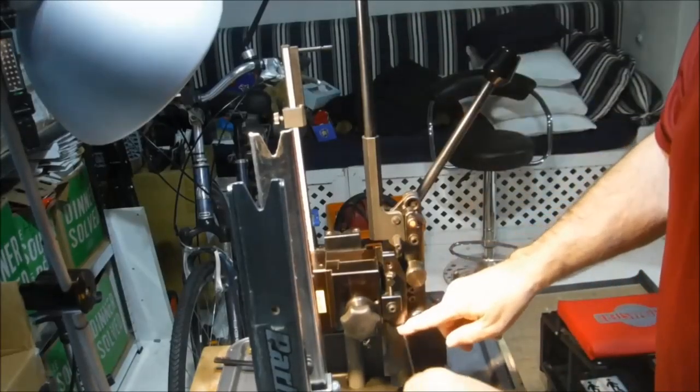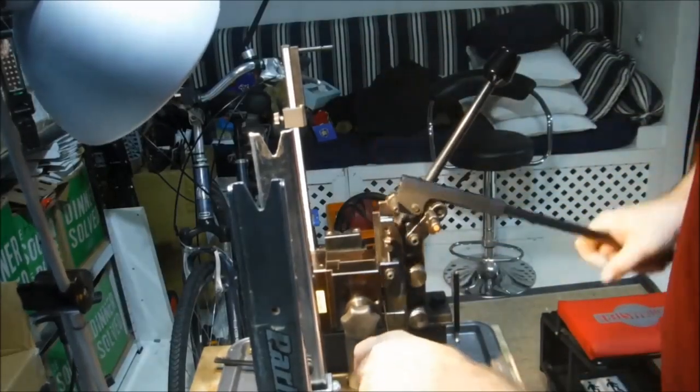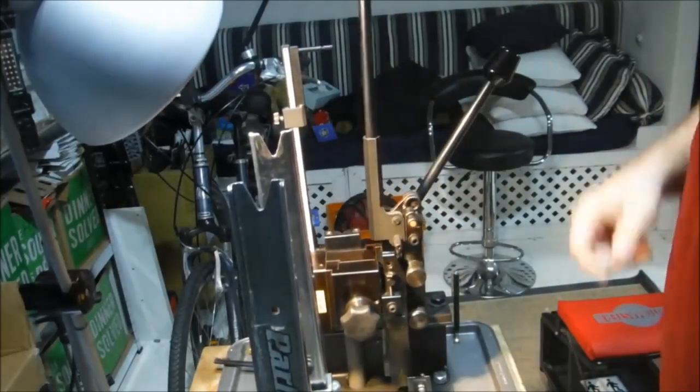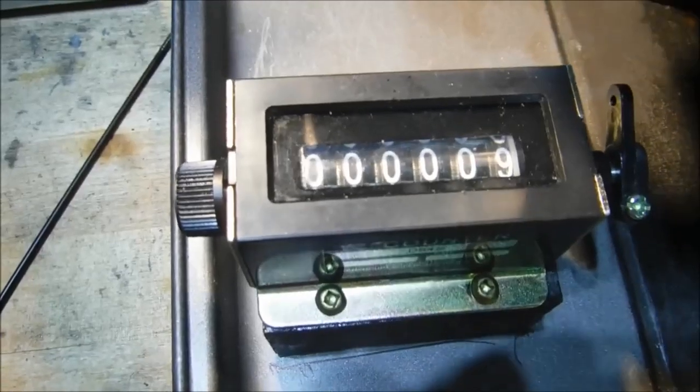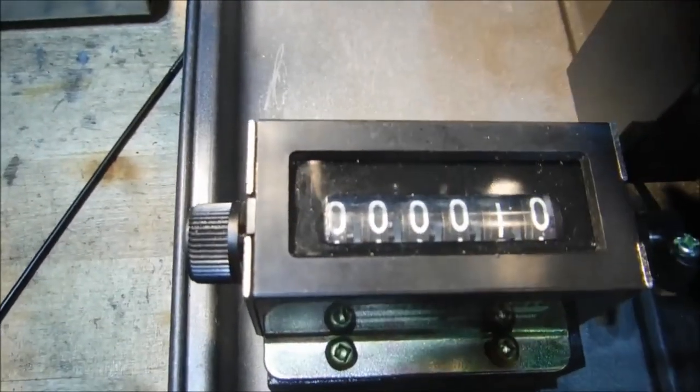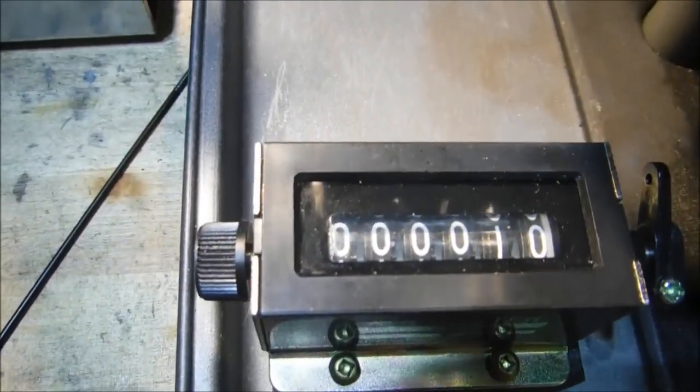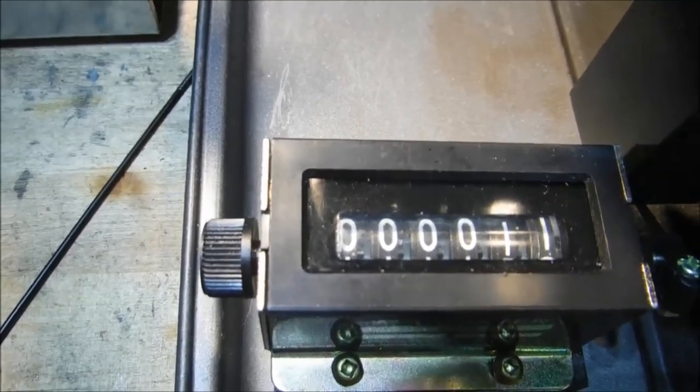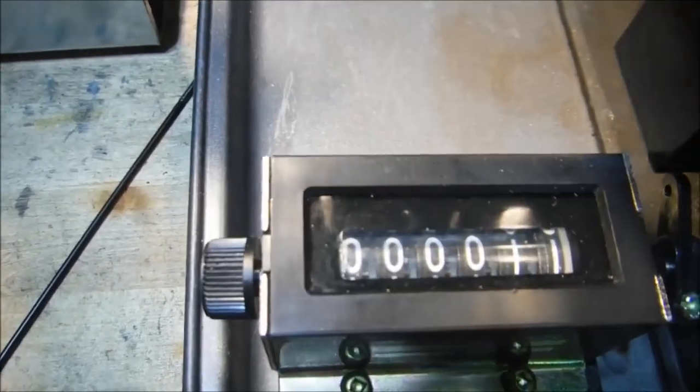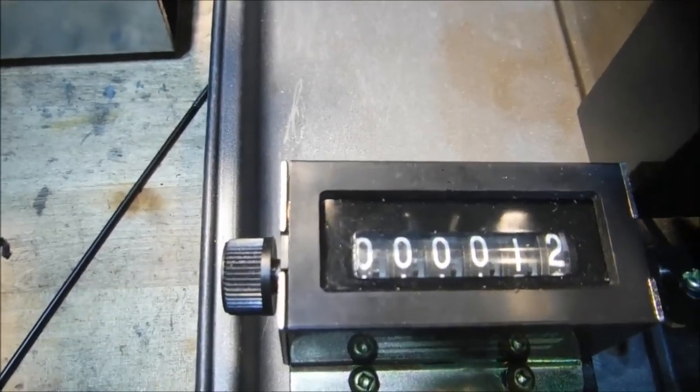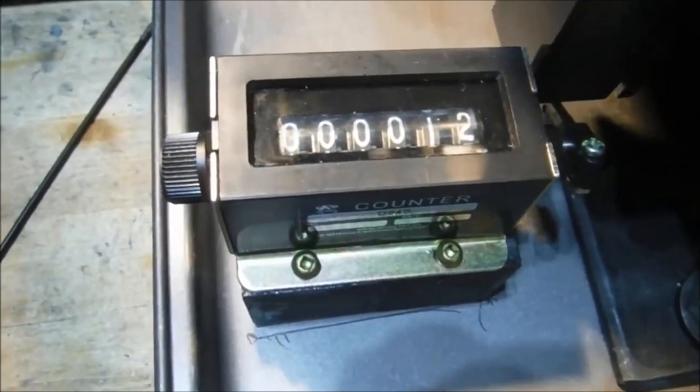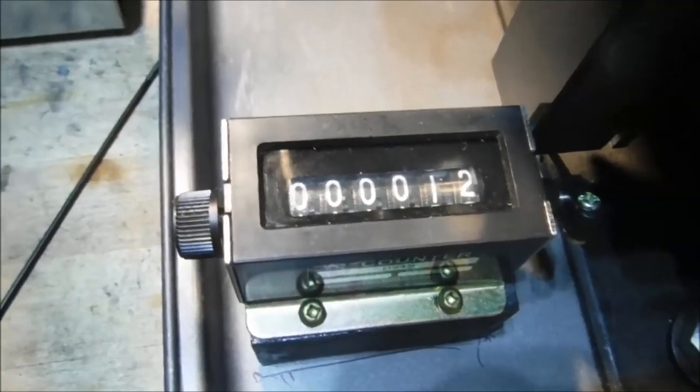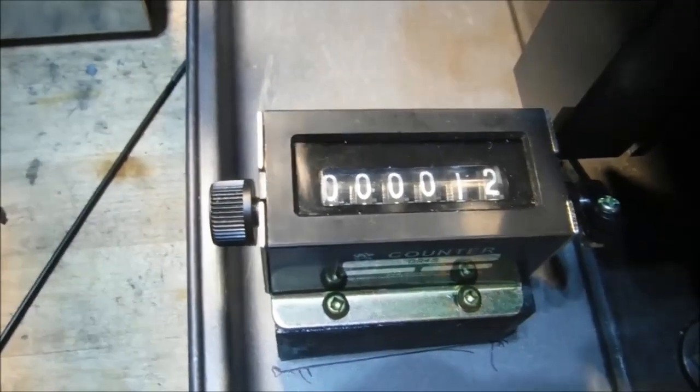So every time we thread a spoke, the counter ticks over. We've got six digits on the counter, so it'll count to 999,000. I don't think I'll ever have to go beyond that.